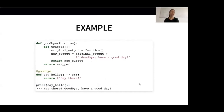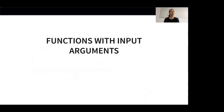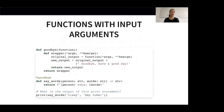But what if we want to decorate a function that has input arguments? Since we want to be able to decorate all kinds of functions, not only those that don't take any input arguments. For example, we might have a function that allows a person to talk to another person, such that Lizzie could say hello to Luke. We somewhat need to make sure that our goodbye wrapper function can process the arguments person and words. This is not that hard — we simply use *args and **kwargs to collect our positional and keyword arguments and forward them to the original input function. The wrapper function now collects all positional arguments in args and all keyword arguments in kwargs, which are then forwarded to the input function.